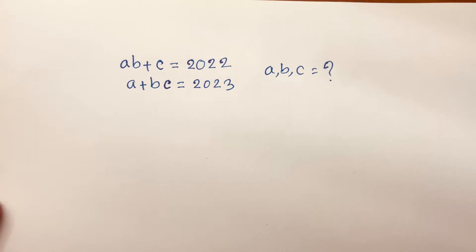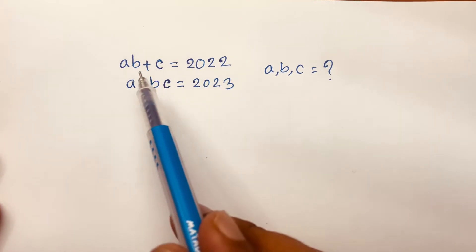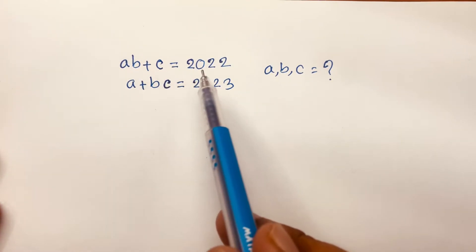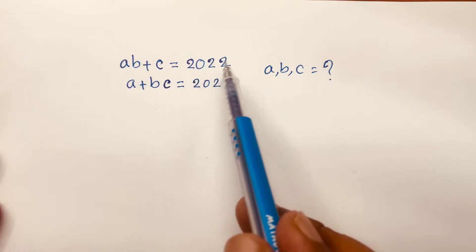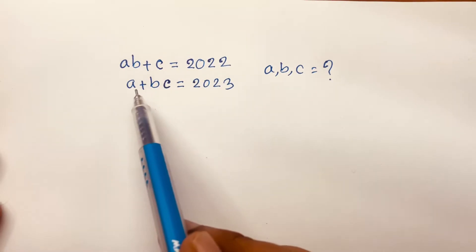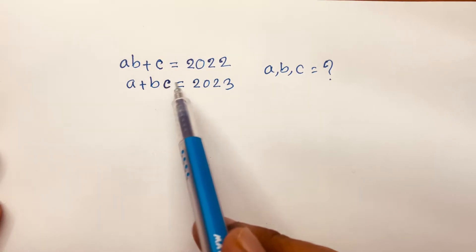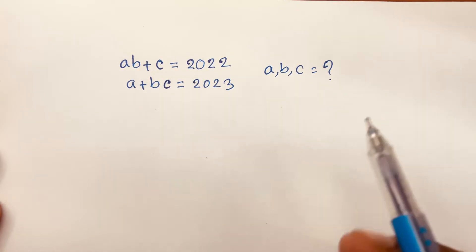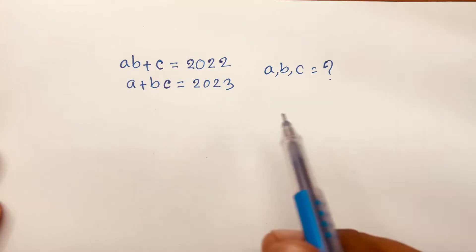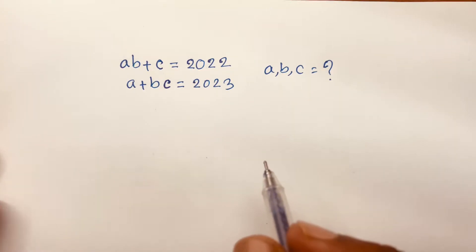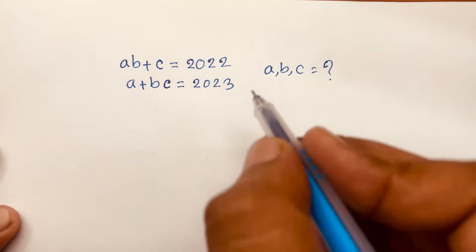How to solve this math Olympiad equation? A to the power of B plus C is equal to 2022, and A to the power of B times C is equal to 2023. We'll find out what is the value of A, B, C.